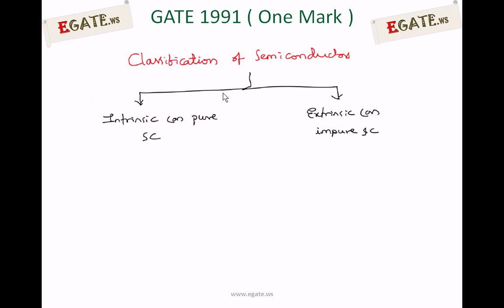Semiconductors are divided into two types: intrinsic and extrinsic. Intrinsic is also called a pure semiconductor. Examples are silicon crystal and germanium crystal. If you take a silicon crystal, it consists of only silicon atoms — no other atoms are present. That is its purest form, and so it is called an intrinsic semiconductor.